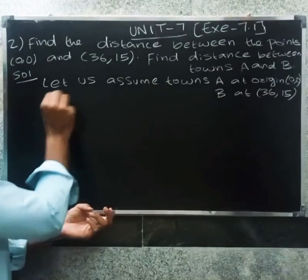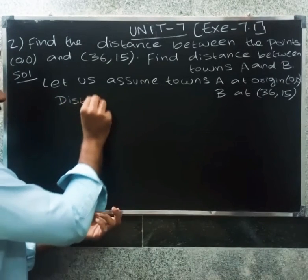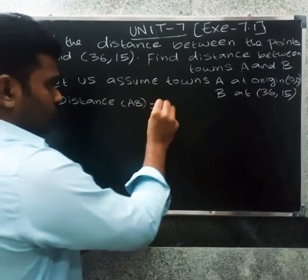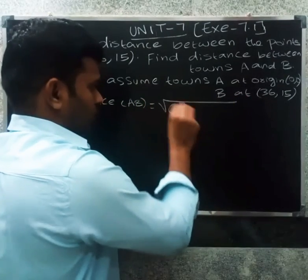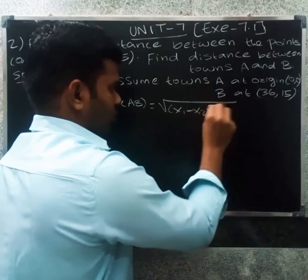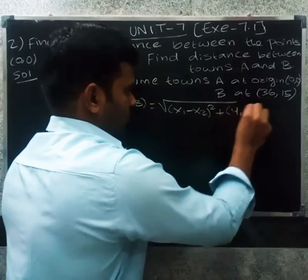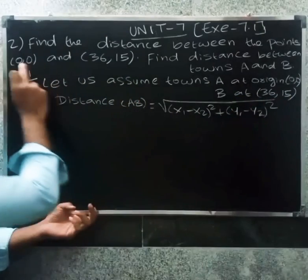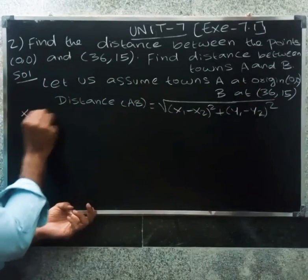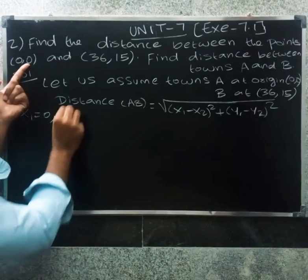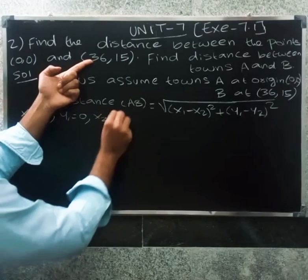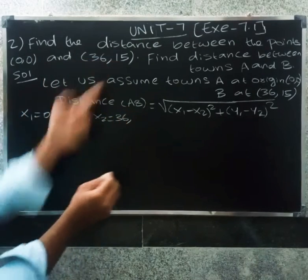So distance formula is AB equals root of (x1 minus x2) the whole square plus (y1 minus y2) the whole square. So x1 value is 0, y1 value is 0, x2 value is 36, y2 value is 15.